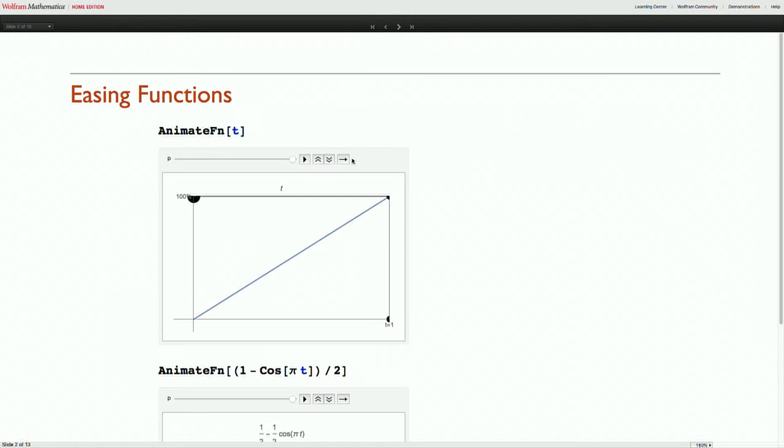You could choose not to do any easing. You could be going from time equals 0 to time equals 1 and just go all the way to 100% linearly and that would look like this.